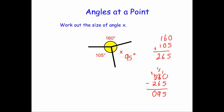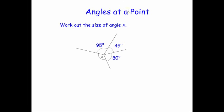Let's have a look at another question. This time the question says: work out the size of angle X, and we've got 4 angles that meet together at a point — 95, 45, 80, and X. Again, to find X, we'll add together the three angles we're given, and because we know the whole thing adds up to 360, if we take that away from 360, we'll see what's left for X.